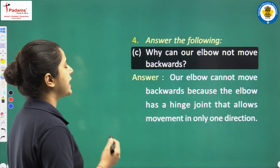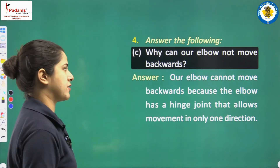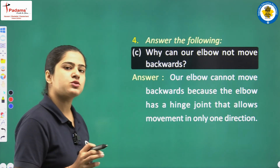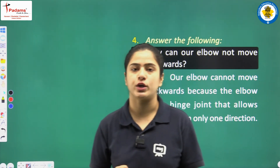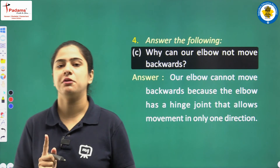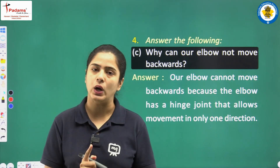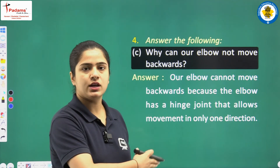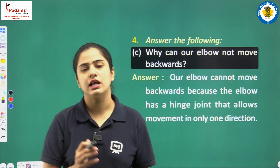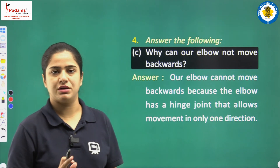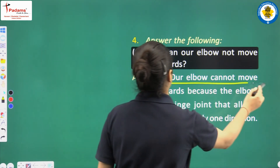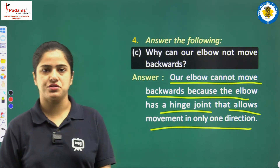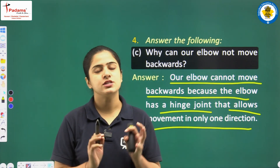Why can our elbow not move backwards? Our elbow has a hinge joint, which always allows movement in only one direction — just like a gate that opens and closes in one direction only. That is why the elbow allows movement in only one direction and cannot move backwards.